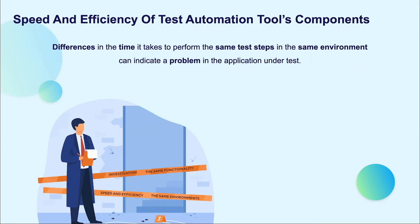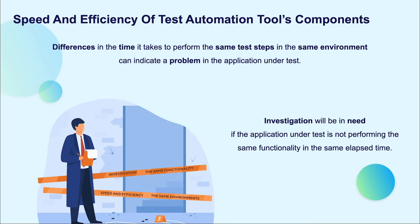Let's move on to the next internal metric. Differences in how long it takes to perform the same test step in the same environment can indicate problems in the application under test. According to the second internal metric — speed and efficiency of test automation components — investigation will be needed if the application under test is not performing the same functionality in the same elapsed time.